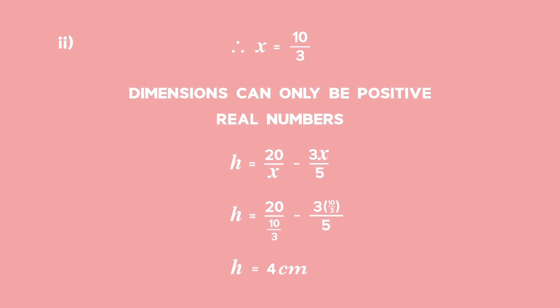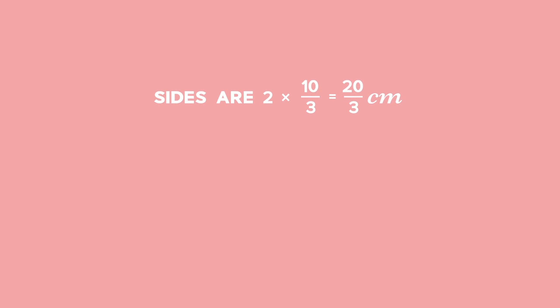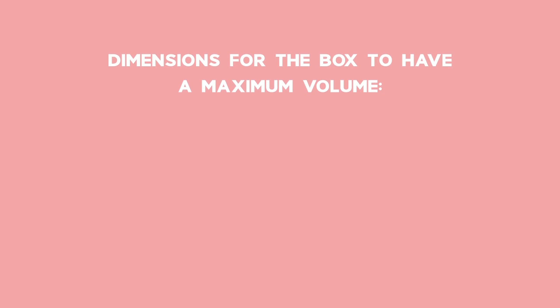By substituting 10/3 for x, we find the sides to be 20/3 centimetres and 10 centimetres. So, for the box to have a maximum volume, the dimensions must be 10 cm × 20/3 cm × 4 cm.